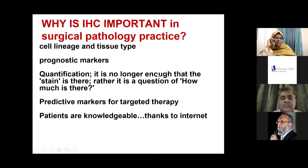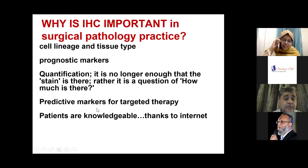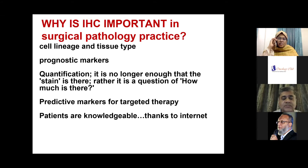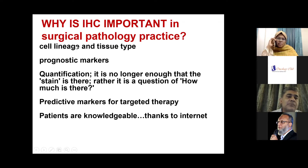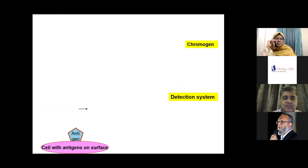Why is immunohistochemistry important in surgical pathology? It tells you the cell lineage and tissue type. It gives you prognostic markers and predictive markers. The importance of immunohistochemistry is basically to determine what type of tissue it is, what type of tumor it is, how to prognosticate them, and what the predictive markers are.